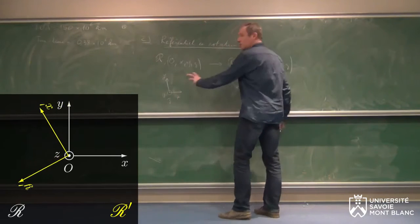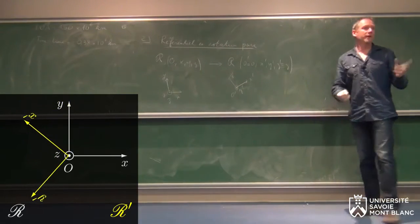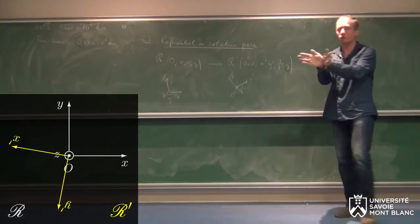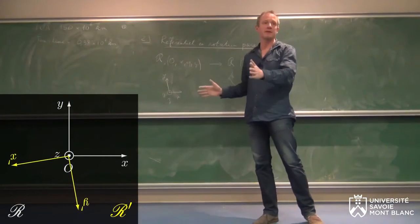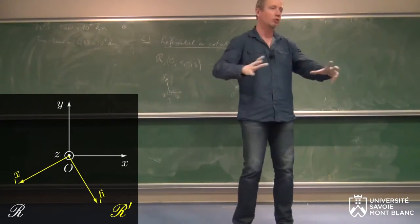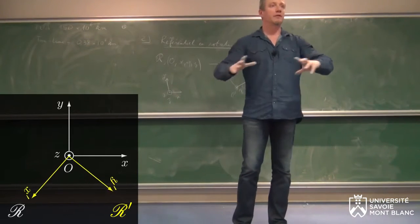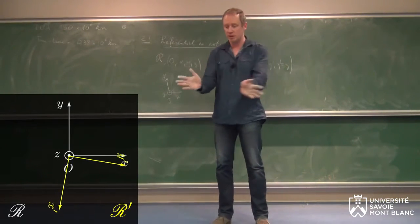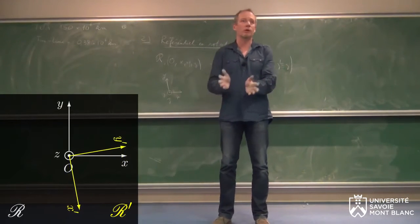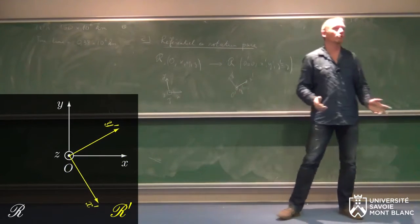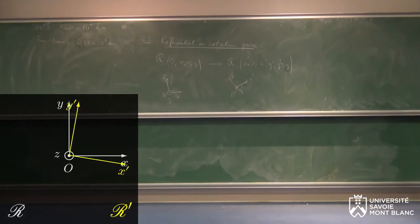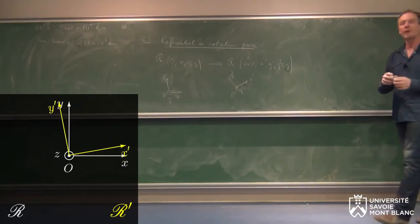On a un référentiel, c'est celui de la pièce. Quelqu'un est mis sur un plateau, il tourne à vitesse constante, et lui a ses axes qui sont dessinés sur le plateau et repère tout par rapport à ces axes. Ça paraît débile avec un plateau, mais par exemple la Terre sur laquelle on est maintenant, c'est exactement la situation dans laquelle on est — on est sur un truc en train de tourner.